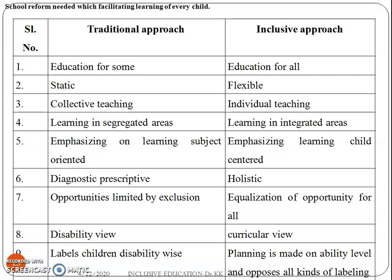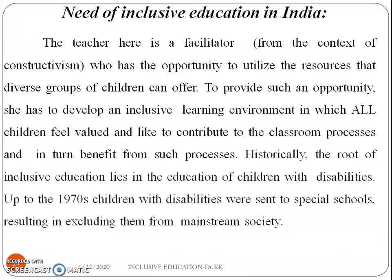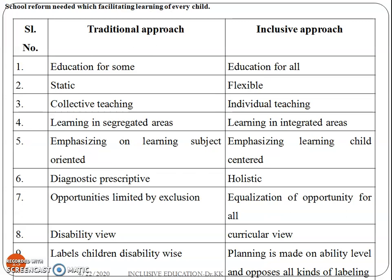In the traditional approach, teaching emphasizes subject-oriented learning, whereas inclusive education emphasizes child-centered subjectivity. The traditional approach has a diagnostic perspective, whereas the inclusive approach has a holistic approach. In the traditional approach, opportunities are limited by exclusion, whereas the inclusive approach promotes equalization of opportunities for all students. In the traditional approach, disability is viewed in isolation, whereas in the inclusive approach it is viewed within the curricular context. The traditional approach labels children disability-wise, whereas the inclusive approach plans based on ability level and opposes all kinds of labeling.